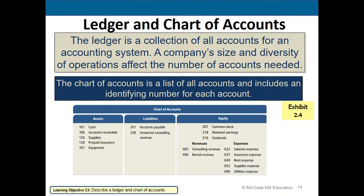Good planning means leaving gaps in the chart of accounts numbering in case you need to add accounts in between existing ones. For instance, a new account between supplies and accounts receivable might be account number 120. These assets and liabilities are also classified, which we'll talk about in Chapter 3.